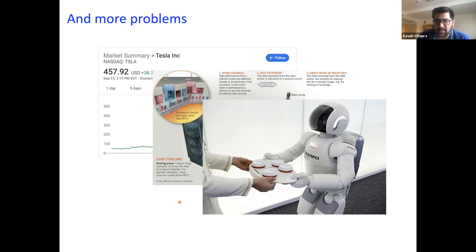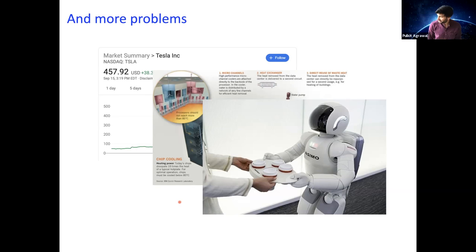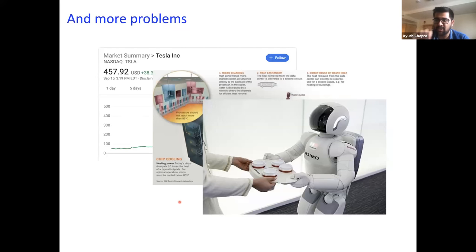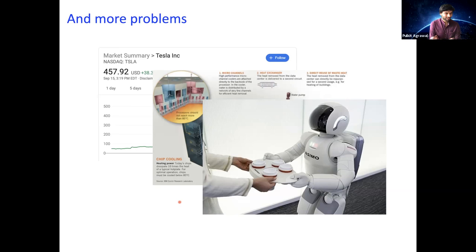A question came up: in that previous work, is there a single policy learned independently for each agent or shared policies? I think the policies are different for agents on different sides. If you're on the same side of the wall, I believe the policy is shared, but I'll recheck the paper — I'm not 100% confident on that. We'll discuss this in more detail later.